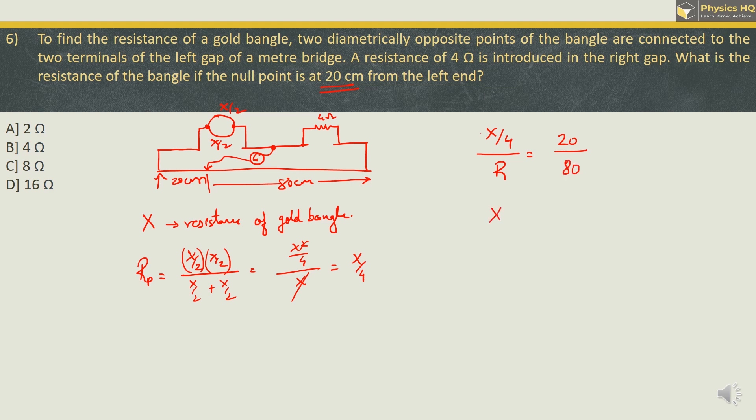So we can write X by 4 divided by R, this is equal to 20 by 80 is also 1 by 4. And this 4 and 4 can be cancelled, and what we get X is equal to 4, which is 4. So we can say the resistance of the gold bangle is 4 Ohm. So the correct option is option B.